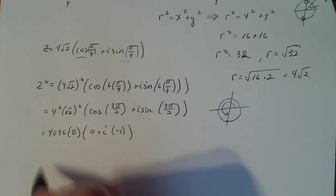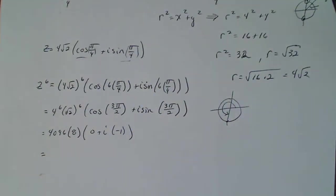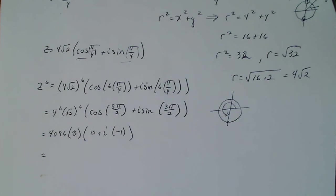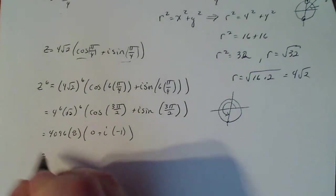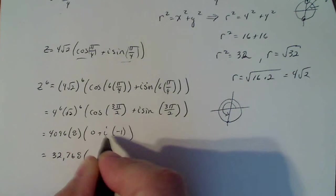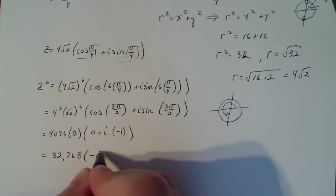So now just finishing one or two more steps, 4096 times 8, let's see, 4096 times 8 gives me 32,768, and minus 1 times i is minus i.